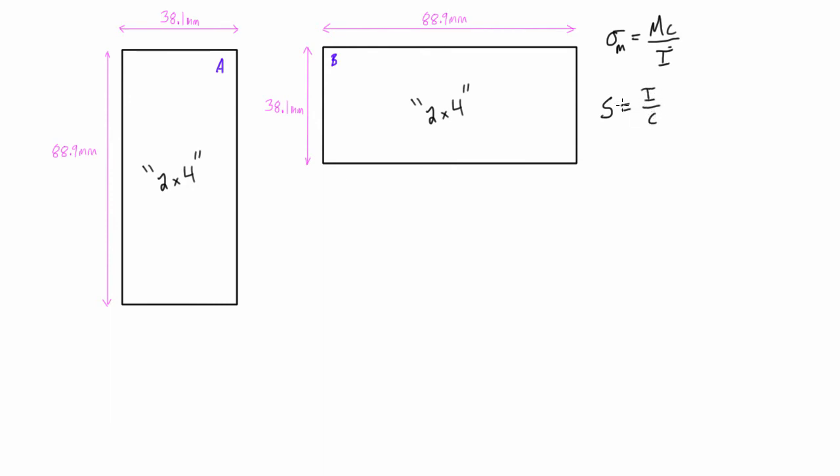So you'll actually see in the back of a mechanics of materials textbook, they'll actually be in the tables entire columns just for this elastic section modulus number, and it'll be really easy for you just to pull that out when you need it.